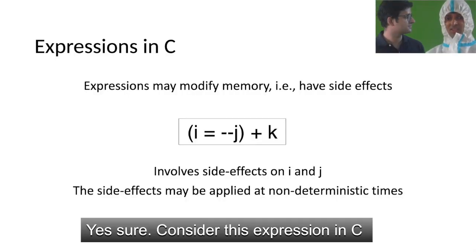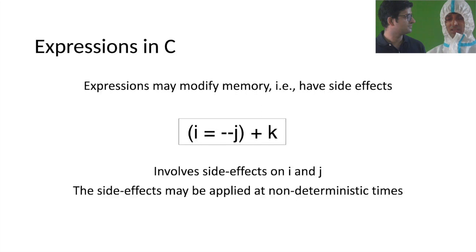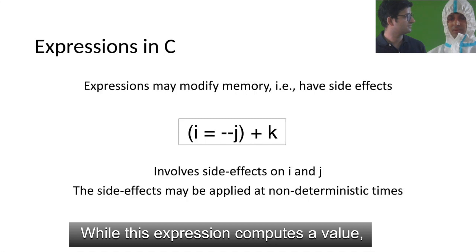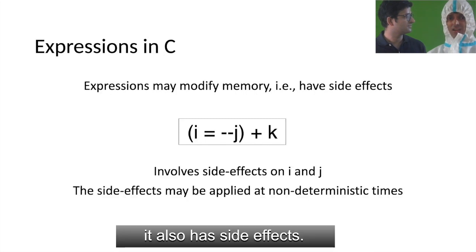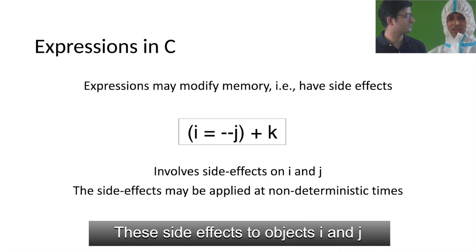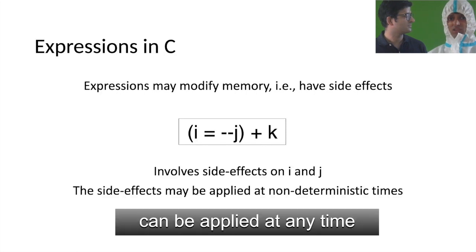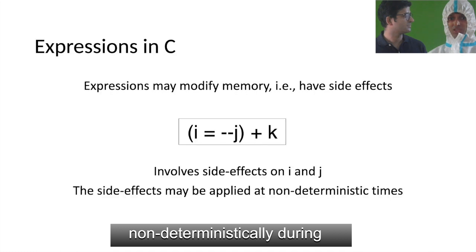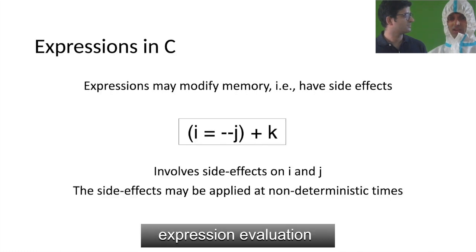Consider this expression in C: i equals minus-minus j plus k. While this expression computes a value, it also has side effects — it decrements j and assigns to i. These side effects to objects i and j can be applied at any time, not deterministically during expression evaluation.